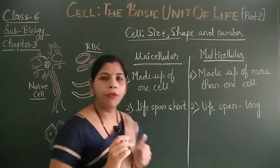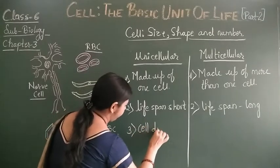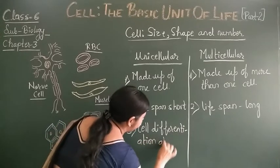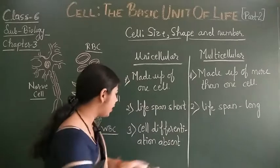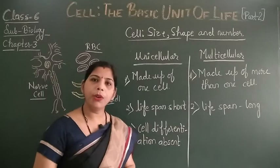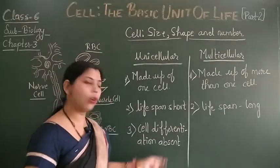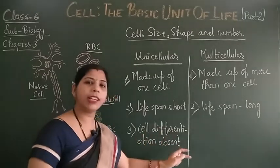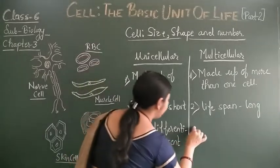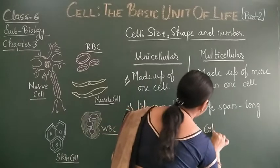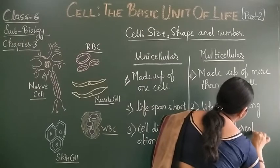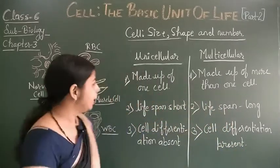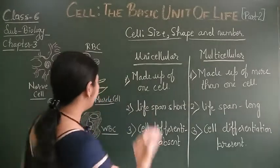One very important thing is cell differentiation. In unicellular organisms, cell differentiation is absent — because there is only one cell, there is no tissue formation, no organs, and no organ specialized for any particular work. That one cell performs all the body functions. But in multicellular organisms, cell differentiation is present.